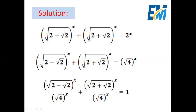Here we have a square root and here we have a square root. So we can write 2 as a square root. But we know that 2 equals the square root of 4. So the equation becomes: square root of (2 minus square root of 2), all to the power x, plus square root of (2 plus square root of 2), all to the power x, equals square root of 4 to the power x.